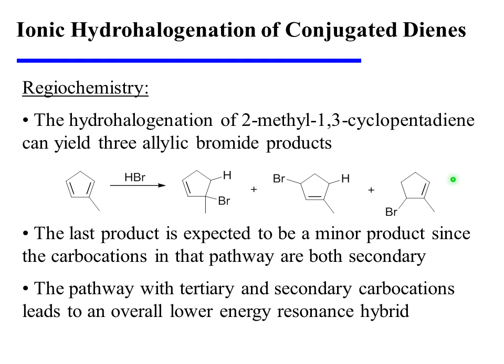However, the last product is expected to be a minor product, since it results from a pathway in which both carbocations are secondary. The pathway with secondary and tertiary carbocations leads to an overall lower-energy resonance hybrid, and therefore results in the two major products of the reaction.